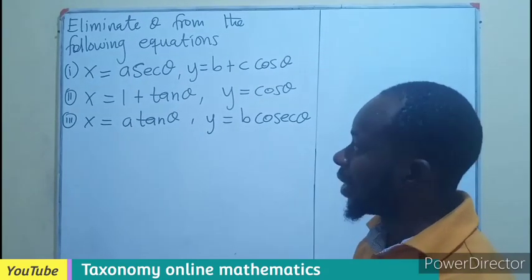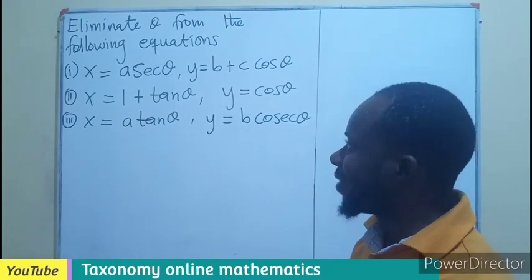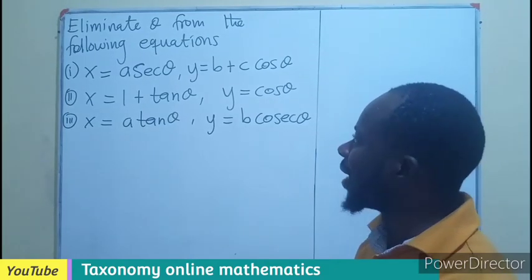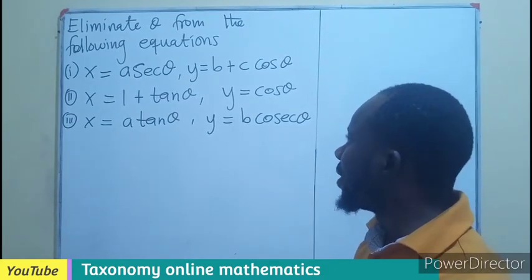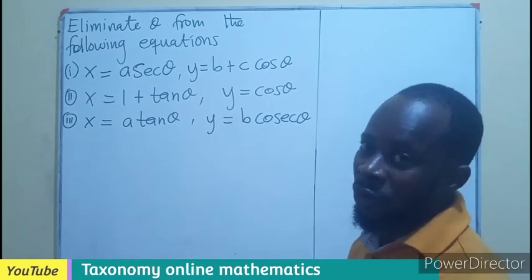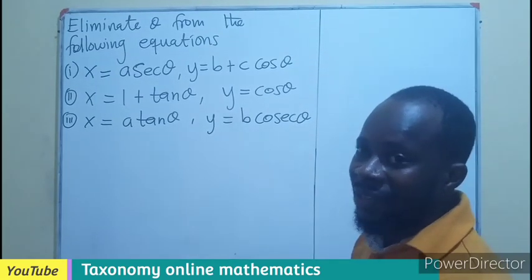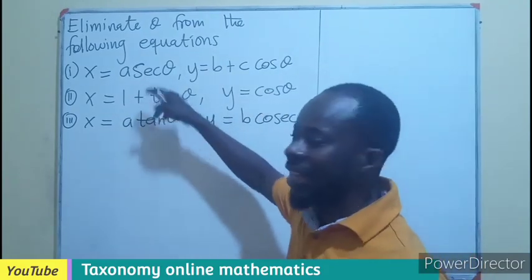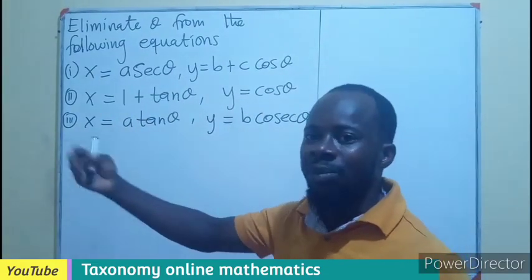The first equation is X equals A sec theta and Y equals B plus C cos theta. So we don't want to see theta. Simply put, we don't want to see cosec in the next expression.